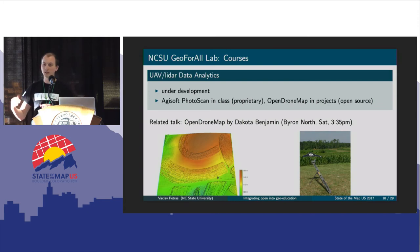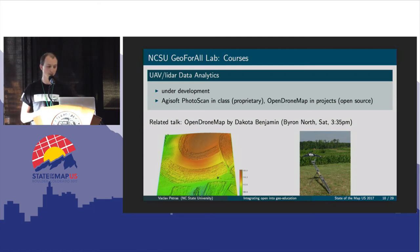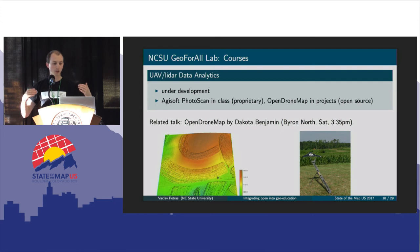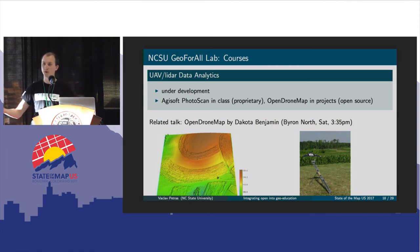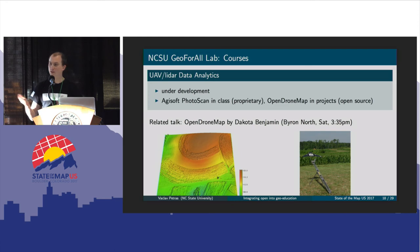In another course about UAV and LiDAR data analytics — this course is under development, we ran two semesters of that — when we started we were not really ready to use OpenDroneMap or other open source tools to process drone imagery, so we were using Agisoft PhotoScan. At this point we are hoping to work with both Agisoft PhotoScan and OpenDroneMap, again having two different software packages. OpenDroneMap has been recently improved with the WebODM interface, and you will be able to learn more about it in a talk by Dakota Benjamin on Saturday in this room.